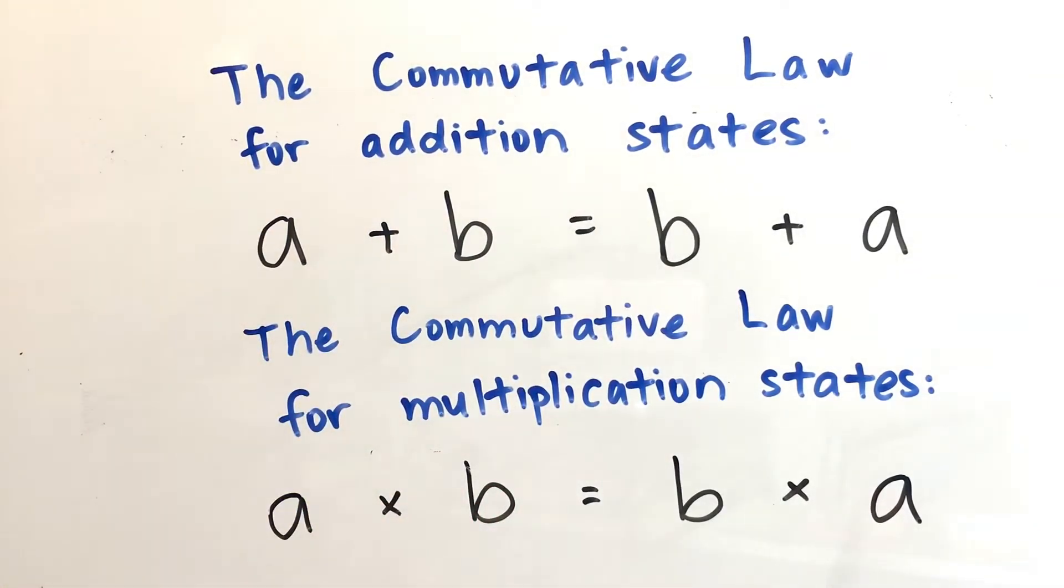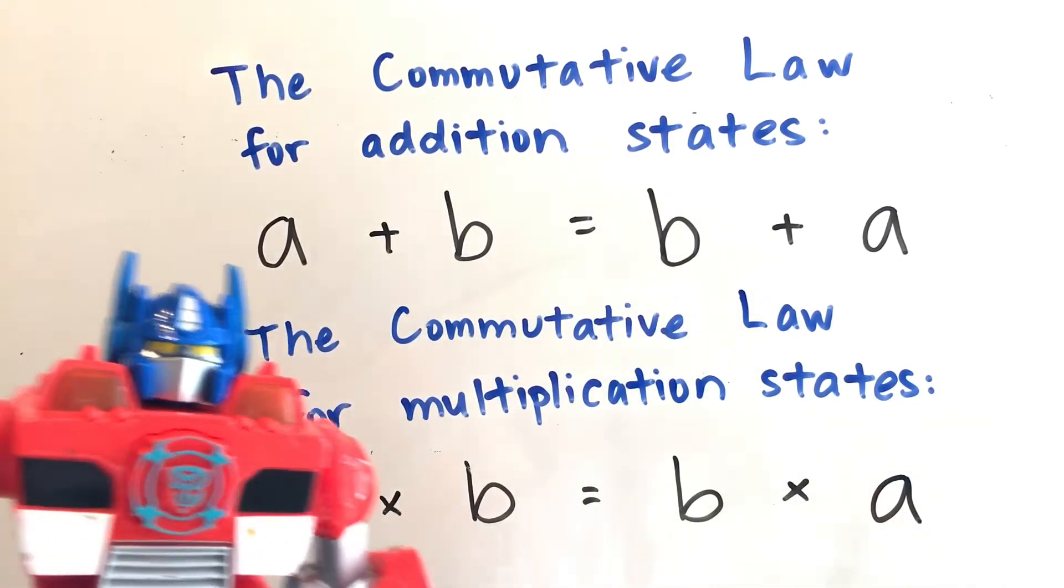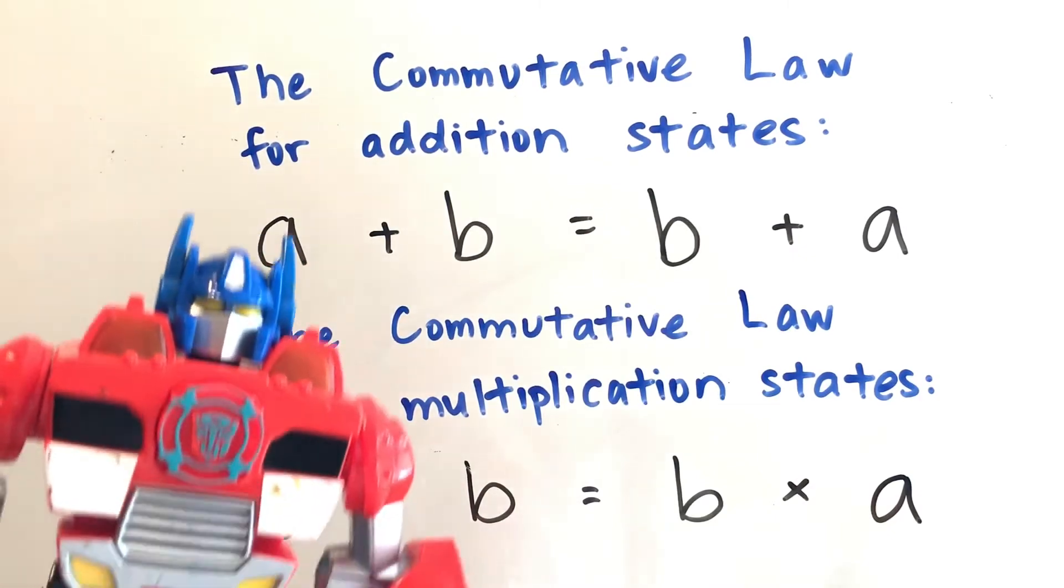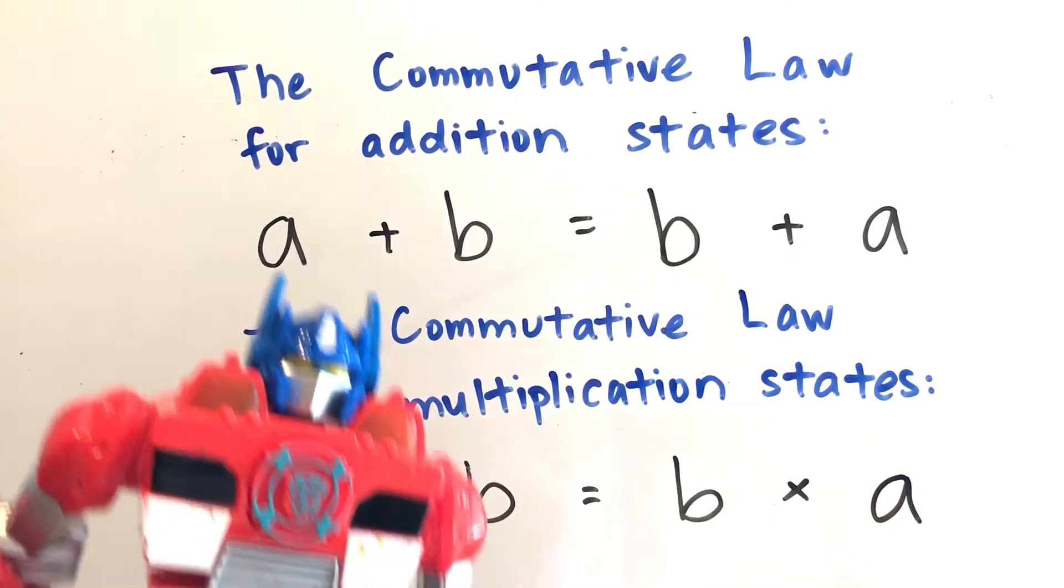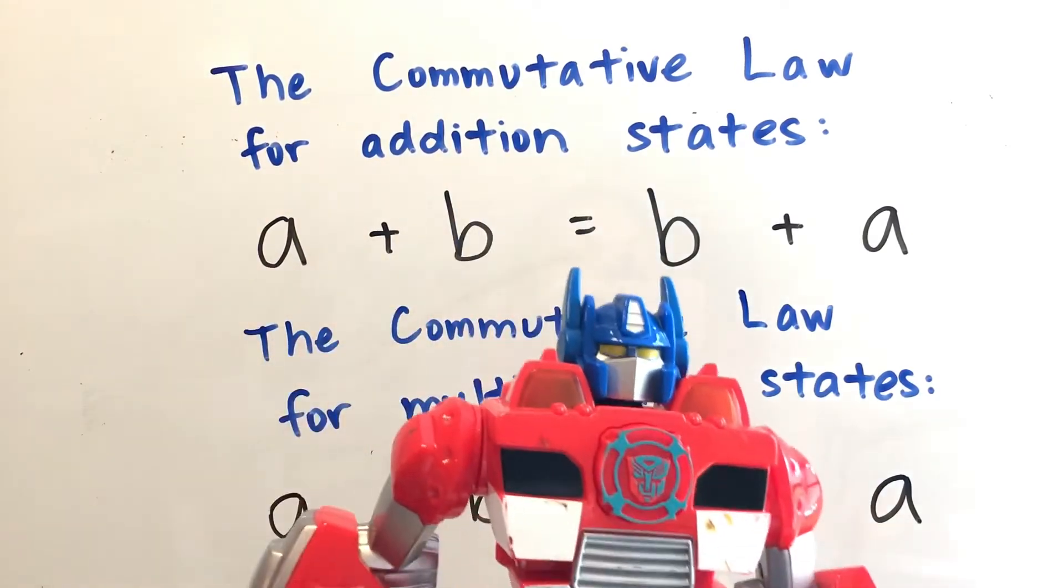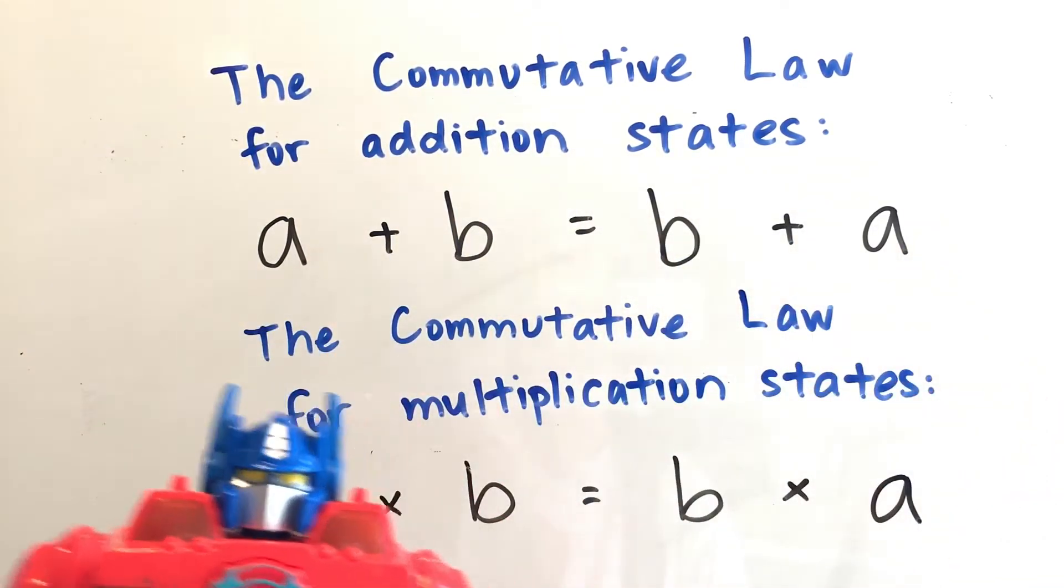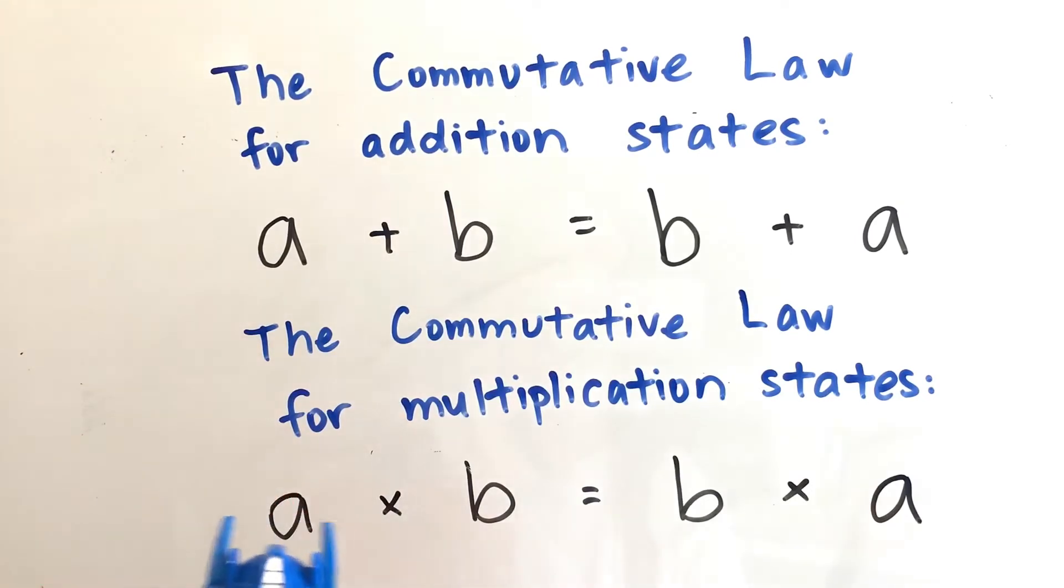Alright, I'll read it to you. So the commutative law states, oh actually I guess I don't need it now, I'll just read it to you. The commutative law for addition states, a plus b equals b plus a. And the commutative law for multiplication states, a times b equals b times a.